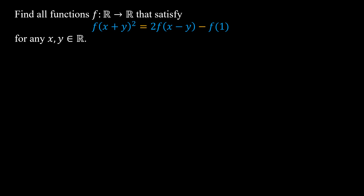Hello everyone. In this video we are going to find all functions f mapping real numbers into real numbers such that f((x+y)²) is equal to f(x) times f(-y) minus f(1), for any real numbers x and y. I will present the solution in one method — so far this is my best method.